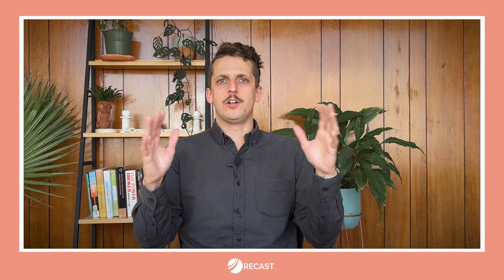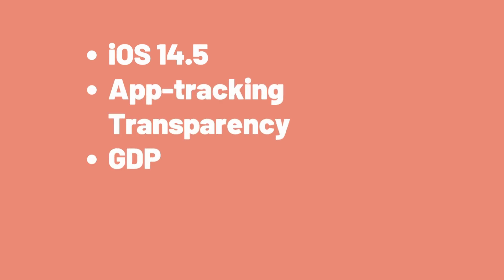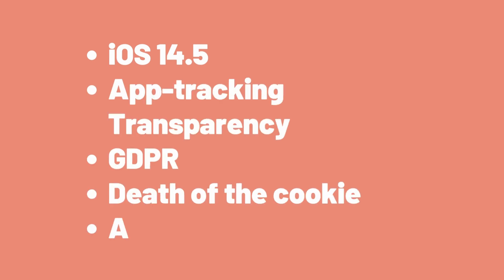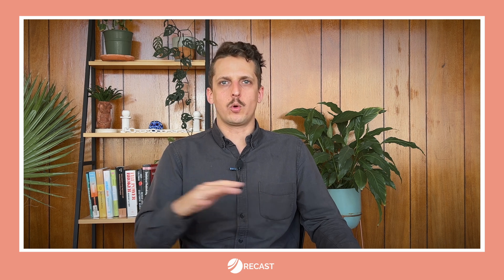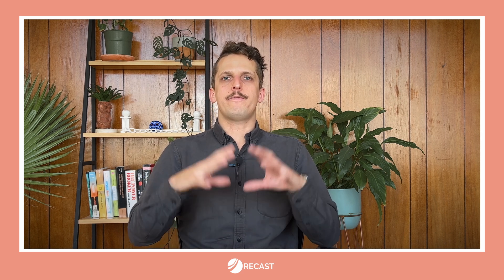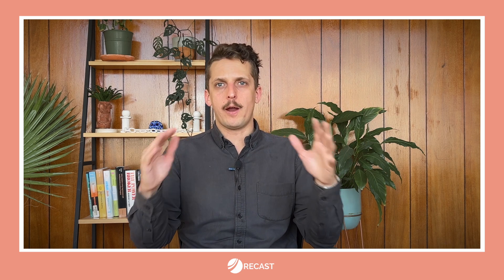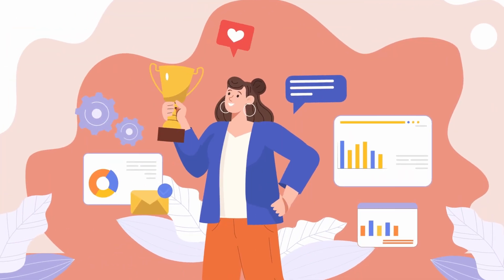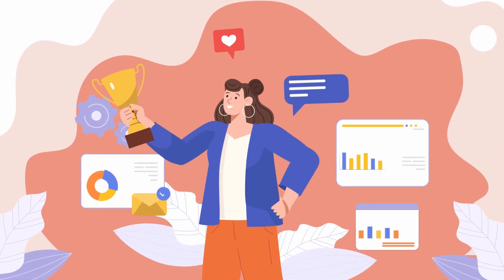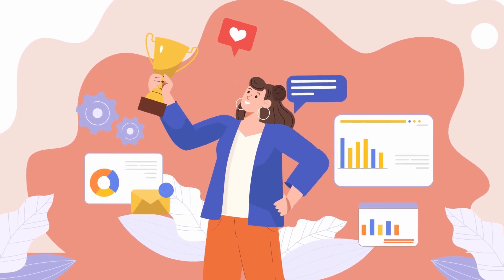Beyond the inherent limitations of these methods, the glory days of digital tracking are over. Between iOS 14.5, app tracking transparency policies, GDPR, Chrome killing the cookie, and a slew of other privacy-promoting regulations and policies, it has gotten a lot more difficult to accurately track individuals across the internet in order to see the full story of what advertisements they saw or engaged with prior to purchase. Because of this, MMM has surged back into popularity. Brands large and small are evaluating how to use these types of models to measure the true incrementality of their marketing spend.